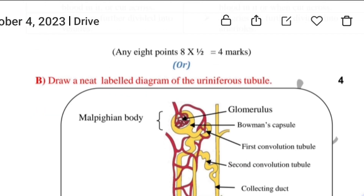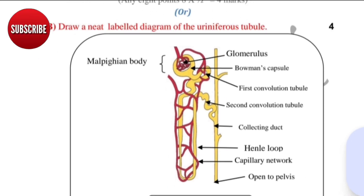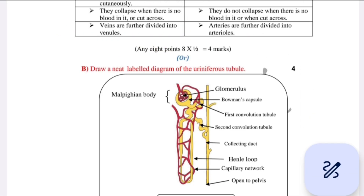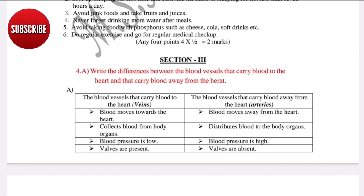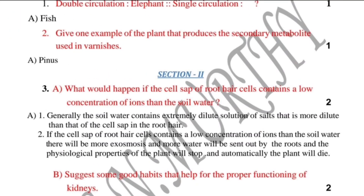Urine ferrous tubules are a structure of the nephron, present inside the kidney. It is also a structure of the urine ferrous tubules. You can choose osmosis and transportation as key concepts here.